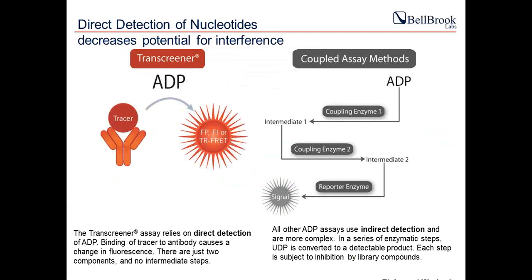Direct detection of nucleotide is unique to our platform because the method is based on just two detection reagents: a monoclonal antibody against the product of the enzyme reaction — for example, an antibody against ADP — and a tracer molecule, which is ADP conjugated to a fluorophore. As ADP is formed from the enzyme reaction, it displaces the tracer and binds to the antibody, causing a change in its fluorescence properties. For TR-FRET we use a terbium label; for FI we use a LI-COR quencher.